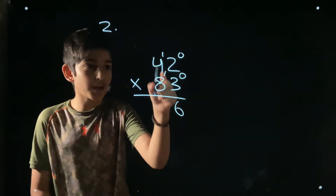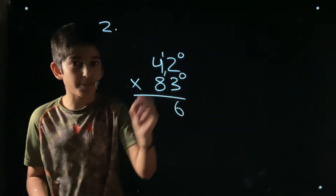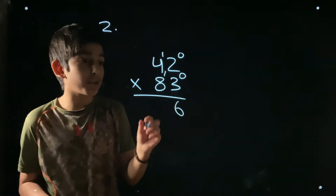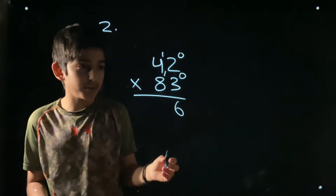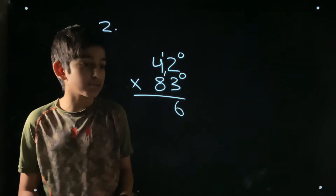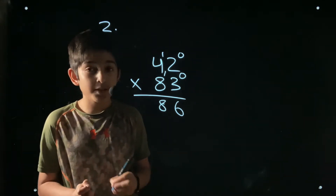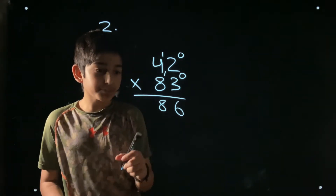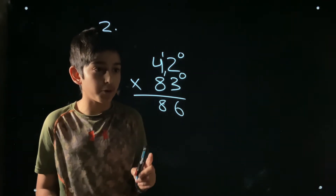For position one, you multiply sideways — the cross pairs — and add them. So 3 times 4 plus 8 times 2: that's 12 plus 16, which equals 28. Write the 8 here and carry the 2. This method uses math facts, so if you know your math facts you can do this in your head.